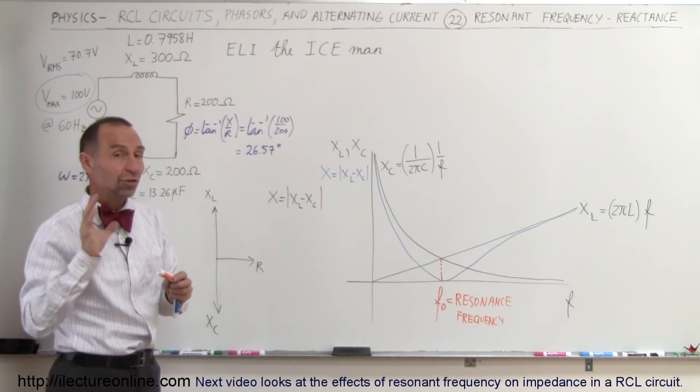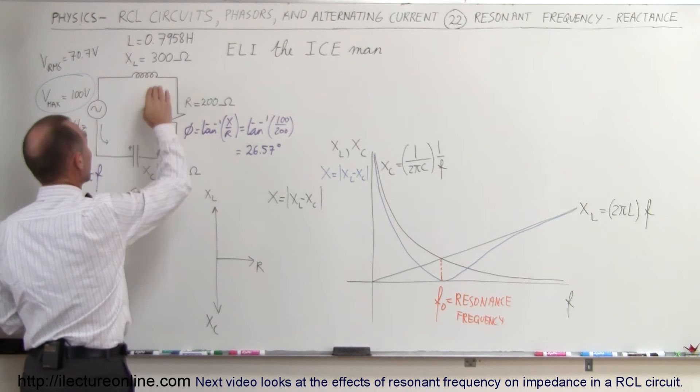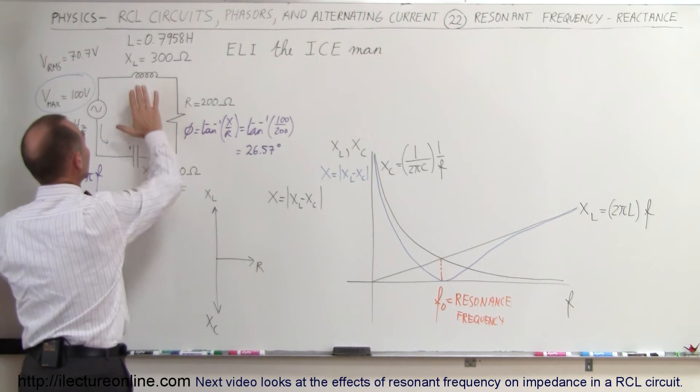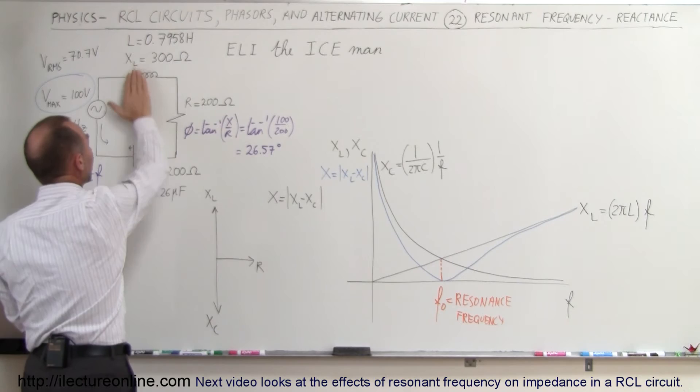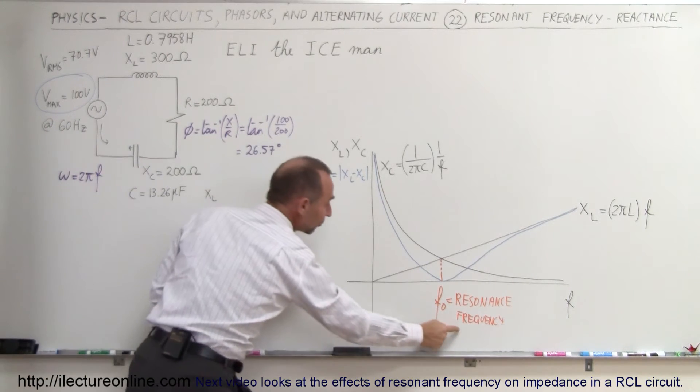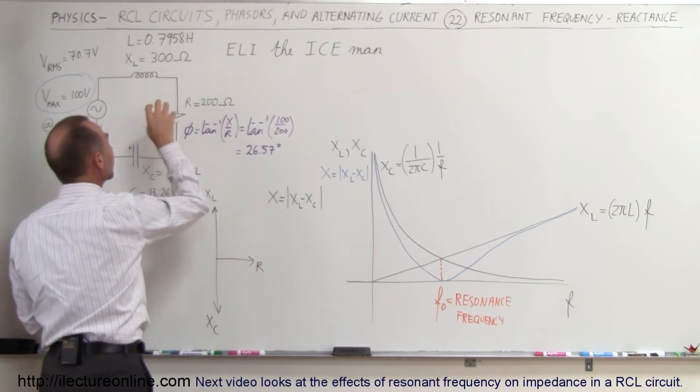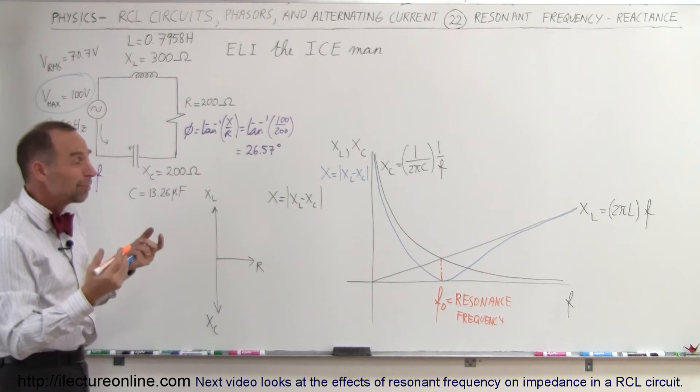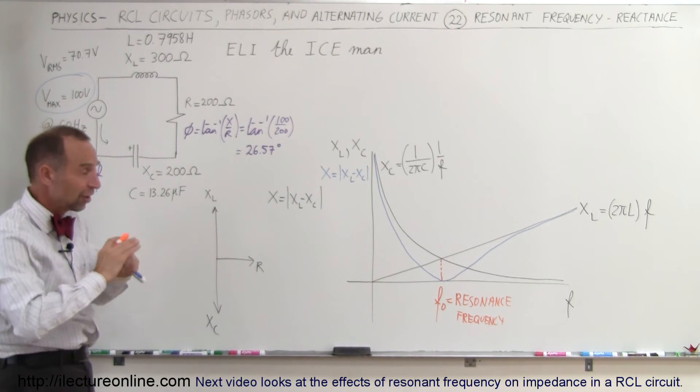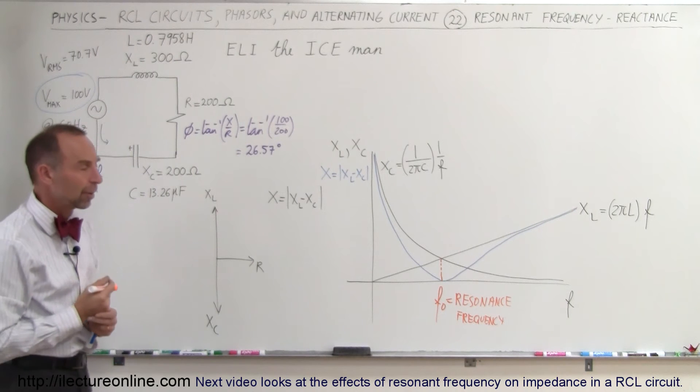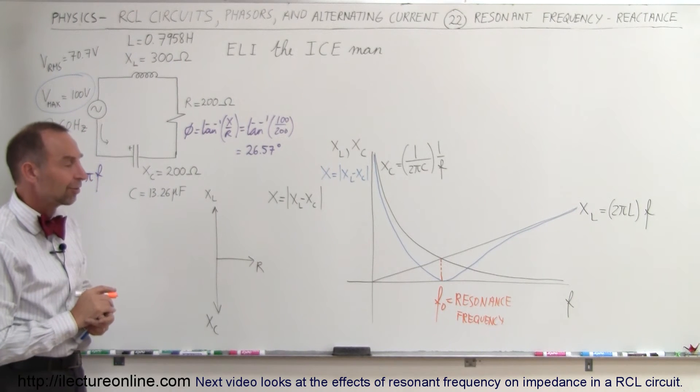The only opposition to the current at that point, and of course we have an RCL circuit with a resistor, an inductor, and a capacitor. Since those two no longer play a role at the resonance frequency, the resistance is the only opposition to the current, and the total impedance then only becomes the resistance. There's no longer a reactance as part of the circuit, and that only happens at resonance frequency.